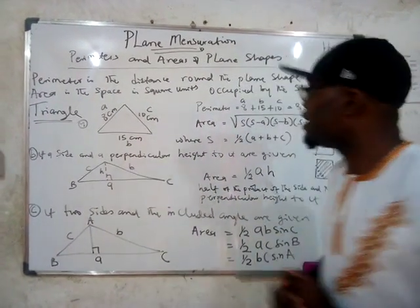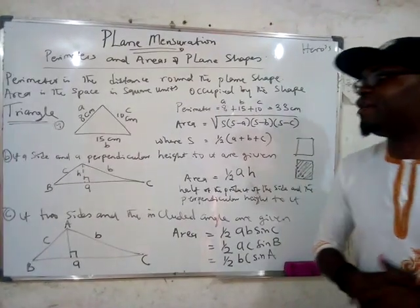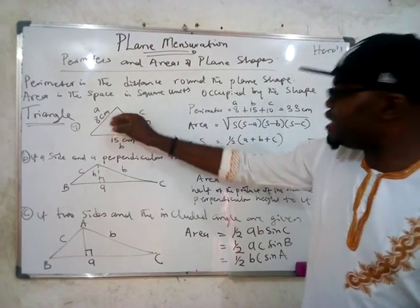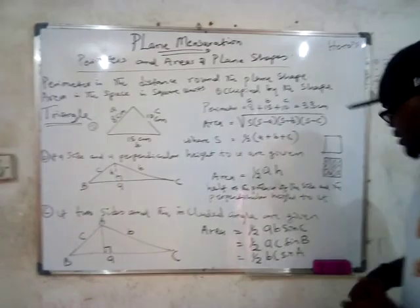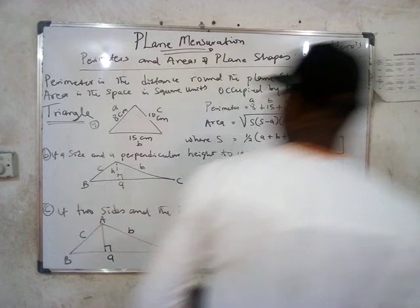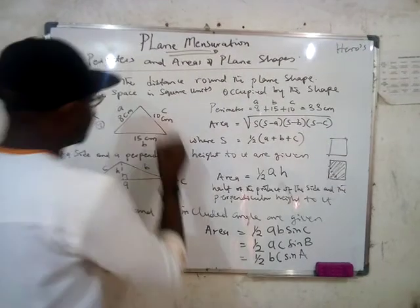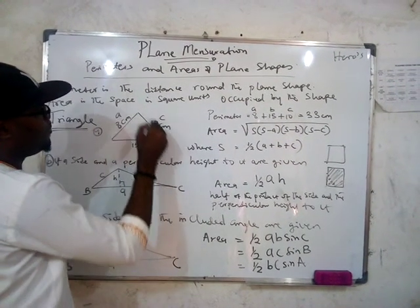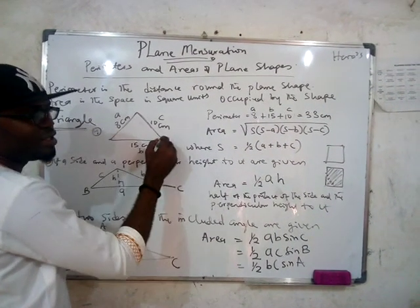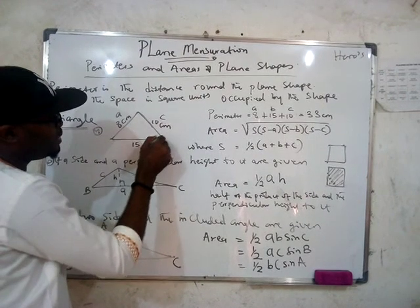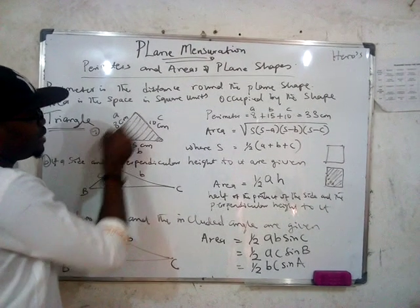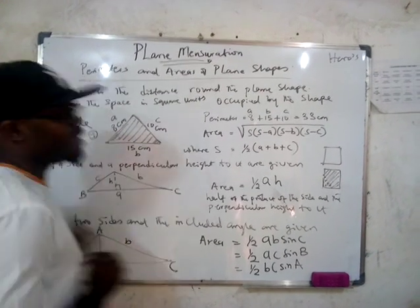Now let's look at the area of a triangle. Area is the space — this physical space. This is the perimeter: this side, this, and this. Whereas area is the space that this triangle is actually occupying.